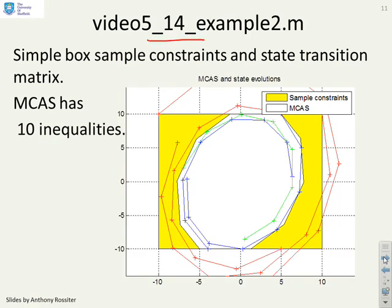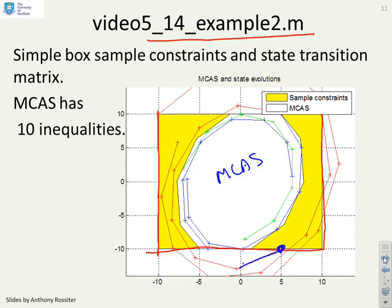Video 5.14 example 2 is similar, but we've added quite a lot of other stuff so you can see what's going on. The original sample constraints go plus and minus 10. But when you calculate the MCAS, it's much smaller, inside here. If you assume you start at some point here which obeys the sample constraints, the first iteration takes you outside the sample constraints, so clearly this point cannot be inside the MCAS. Many areas inside the sample constraints are not inside the MCAS because they lead to state evolutions which violate the sample constraints.